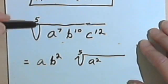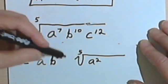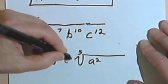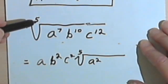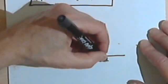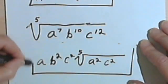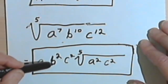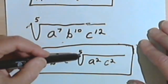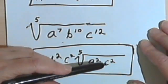Going on to the c to the 12th, 5 divided into 12 goes two times. That gives me a c squared. And I have a 2 remainder. So I'll have a c squared over here as well. So this, then, is my simplified version. ab squared c squared times the fifth root of a squared c squared.